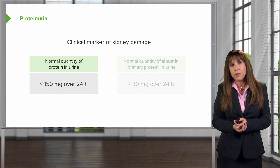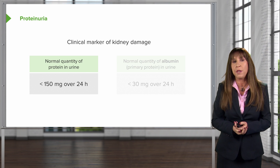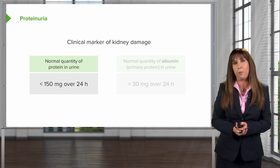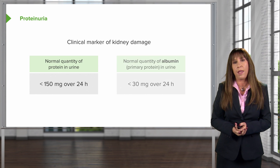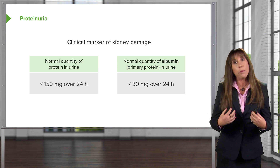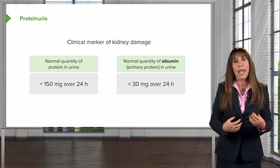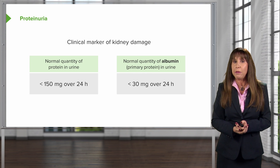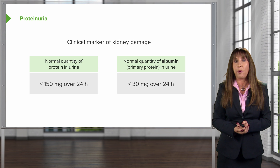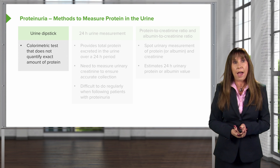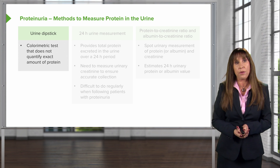Normal quantity of protein in the urine is typically less than 150 mg over a 24-hour period of time. Albumin is the principal component of protein in the urine, and typical amounts of albumin are about less than 30 mg over a 24-hour period. When people exceed that, they have an abnormal amount of protein in their urine.